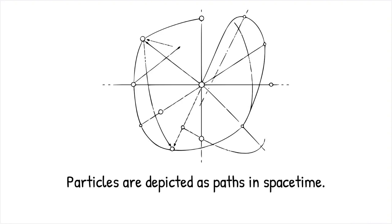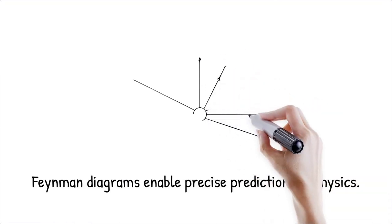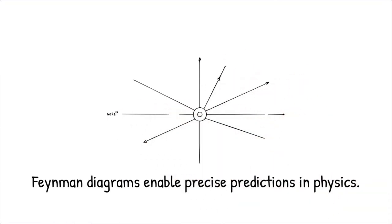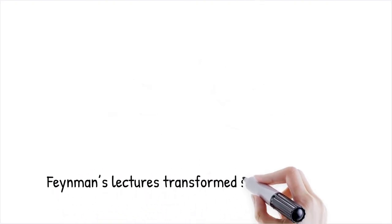Today, Feynman diagrams are widely used in particle physics, condensed matter physics, and quantum field calculations. Feynman diagrams allowed precise calculations of electron-photon interactions, leading to the most accurate predictions in physics. It's like using a simple flowchart to explain a complex business process, making intricate details easier to follow.